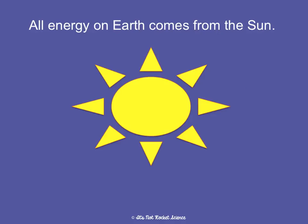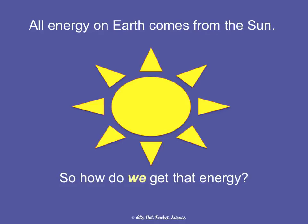All energy on Earth comes from the sun — that's where it all comes from. If the sun wasn't here, we would not be here. So how do we get that energy in order to use it? Because we know that the usable form of energy is ATP, so how do we go from the sun to ATP?